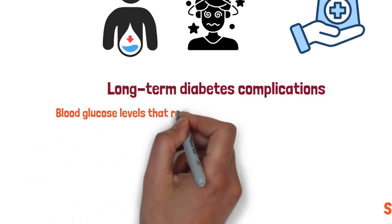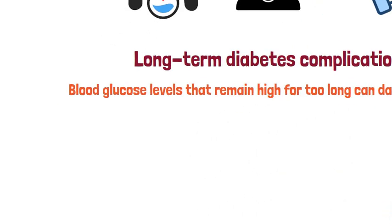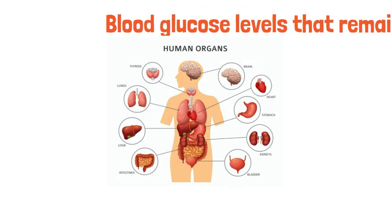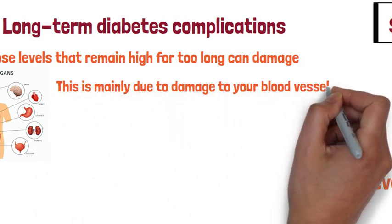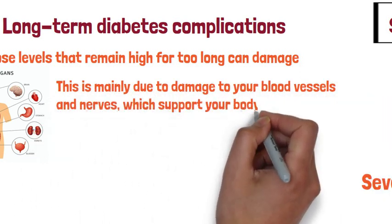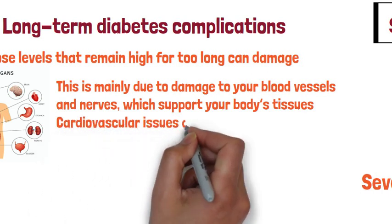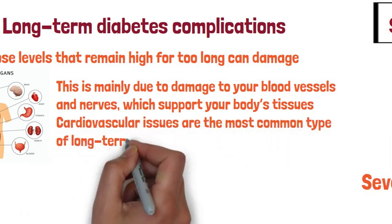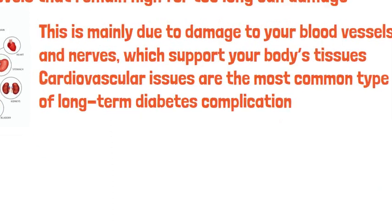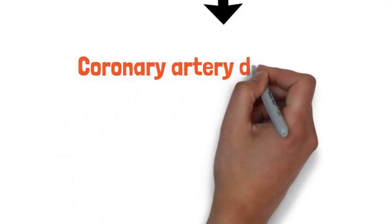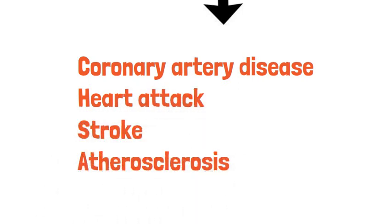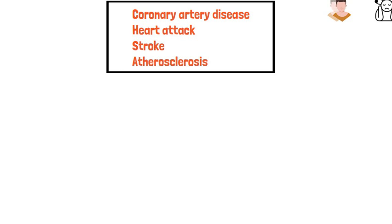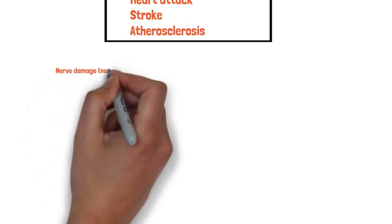Now let's talk about long-term diabetes complications. Blood glucose levels that remain high for too long can damage your body tissues and organs, mainly due to damage to blood vessels and nerves that support your body tissues. Cardiovascular complications — affecting the heart and blood vessels — are the most common long-term diabetes complications. They include coronary artery disease, heart attack, stroke, and atherosclerosis.